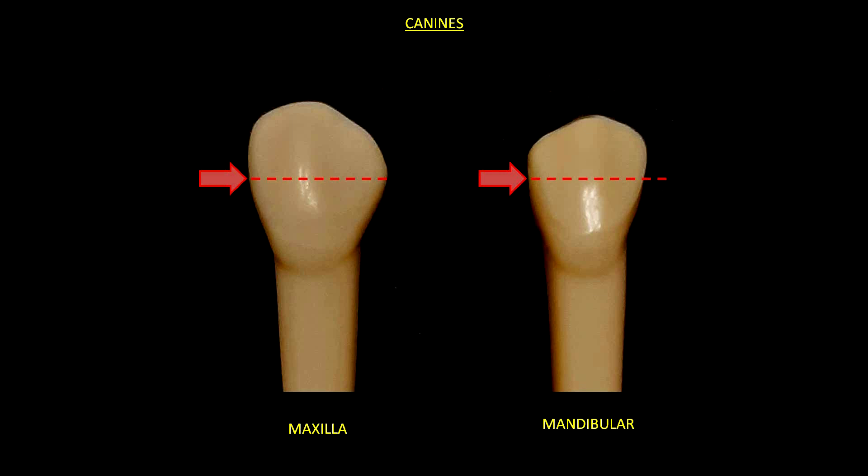In the same way, to identify the right or the left canine, we have to look at the slopes. Thus, the mesial slope is shorter than that of the distal slope.